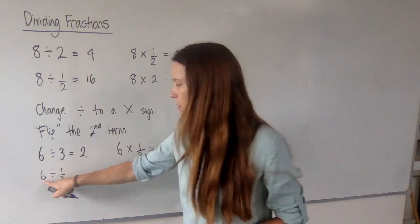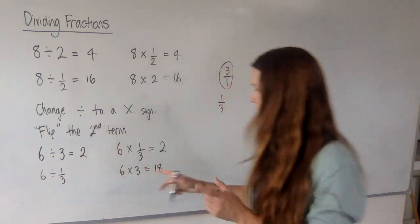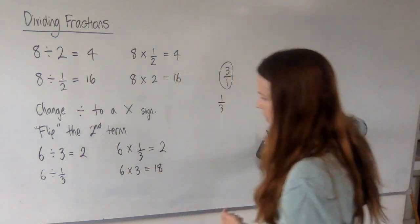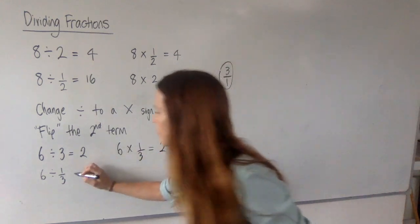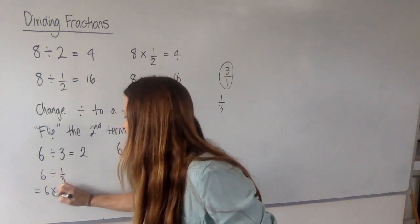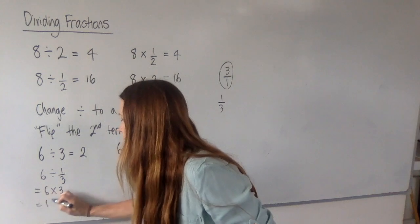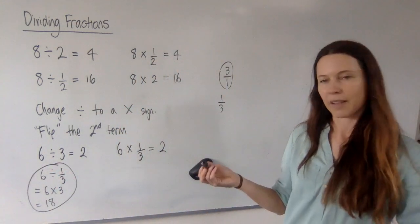So if I want to know 6 divided by a third, I say, well, that's equal to, and I can set it out by saying, okay, that's the same thing as 6 times 3, and that's 18. And that's how I'll set out the working for something like that.